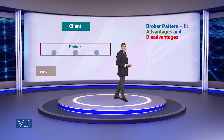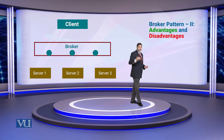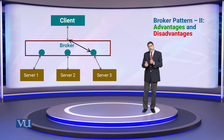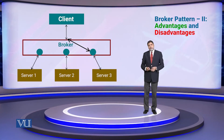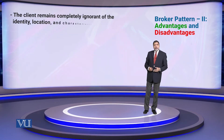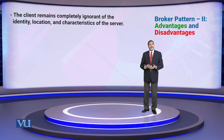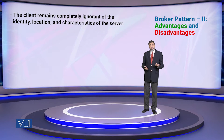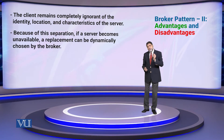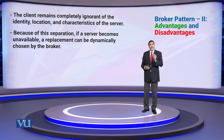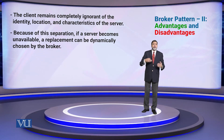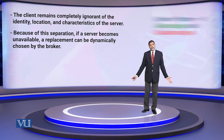The broker pattern is basically a layer of clients and servers which directs the client's request to the appropriate server. The client remains completely ignorant of the identity, location, and characteristics of the server. And because of this separation, if a server becomes unavailable, a replacement can be dynamically chosen by the broker. This is a very powerful concept.